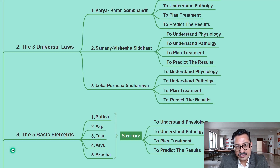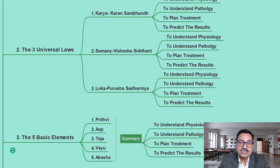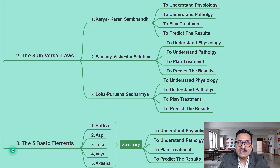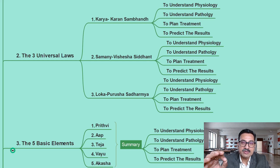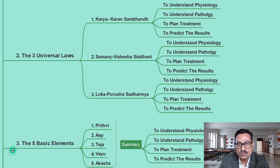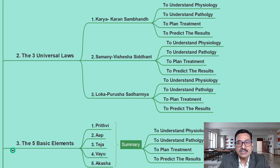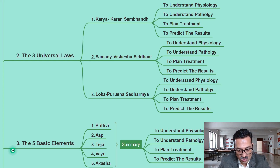Here in the IR Concept Mastery Blueprint course, we are going to discuss exactly how these three universal laws can be used through Ayurveda — for the betterment of patients or persons — to improve health, retain health, deal with disease, understand physiology, understand pathology, plan treatment, and predict results.